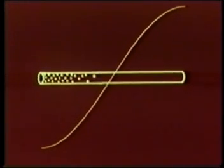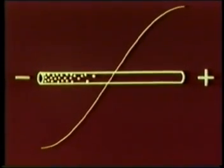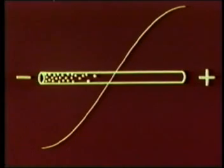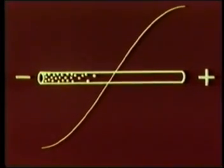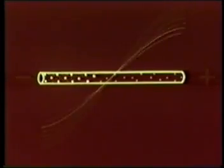At this instant, the antenna has a positive voltage at this end and a negative voltage at this end. When the voltage builds in the opposite direction, the polarity reverses.